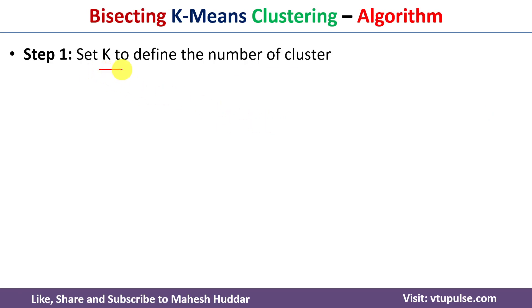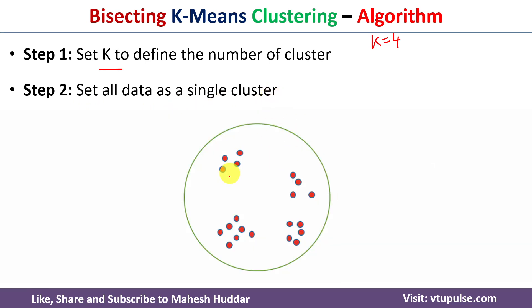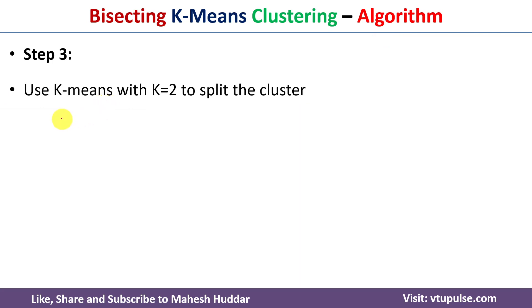The first step is to define the value of k — the required number of clusters. Let's assume k equals four, meaning we want four clusters for the given dataset. The second step is to set all data points into a single cluster. Assuming we have been given some data points, all these data points will be assigned to one cluster.